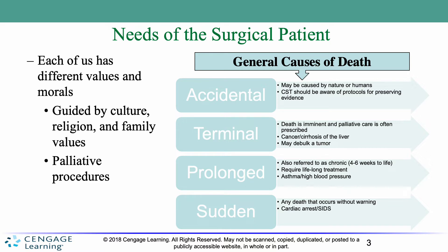The third general cause of death is prolonged, also referred to as chronic. This could be a disease affecting the patient for four to six weeks, but typically it's a lifelong condition requiring lifelong treatment. For example, asthma or high blood pressure — those things typically persist throughout the rest of the individual's life.